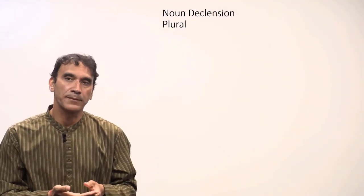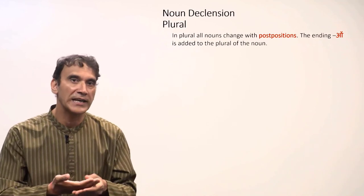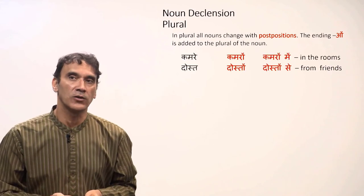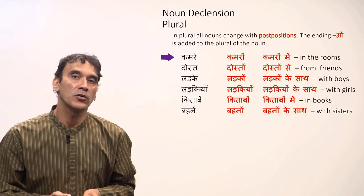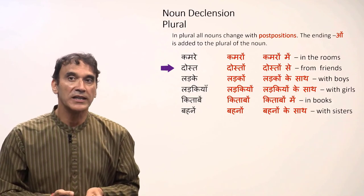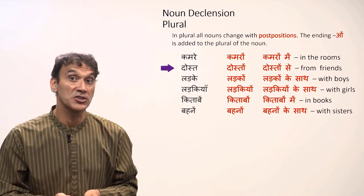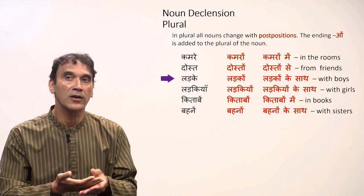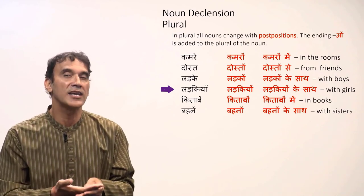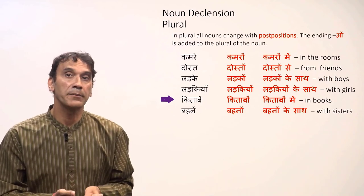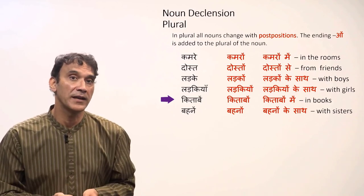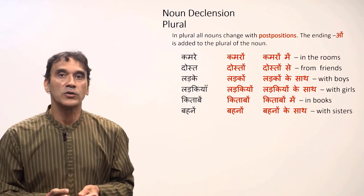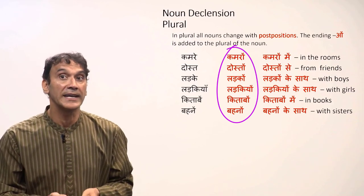Now let's look at nouns in plural. All nouns in plural change — that is, decline — with a postposition. The oblique case ending '-on' is added to the plural form. 'Kamre' becomes 'kamron' — 'kamron mein' means 'in the rooms.' 'Dost' becomes 'doston' — 'doston se' means 'from friends.' 'Ladka' becomes 'ladkon' — 'ladkon ke saath' means 'with boys.' 'Ladkiyan' becomes 'ladkiyon,' 'kitabein' becomes 'kitabon,' 'behenein' becomes 'behenon.'